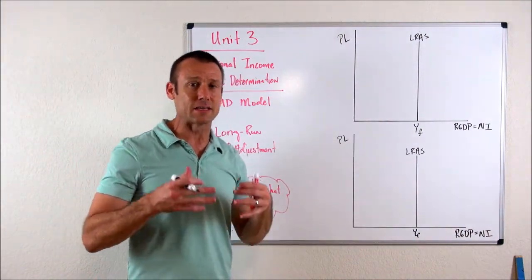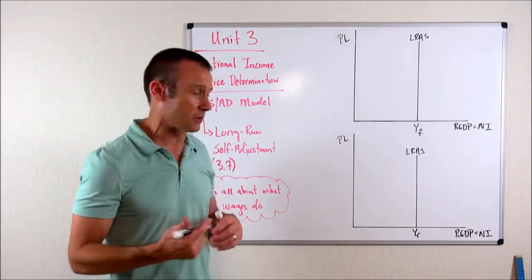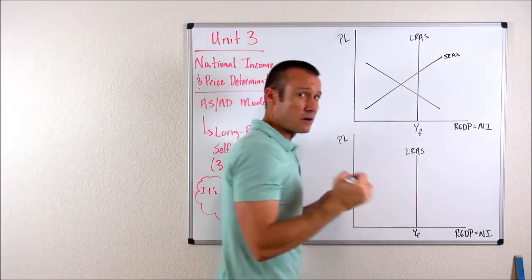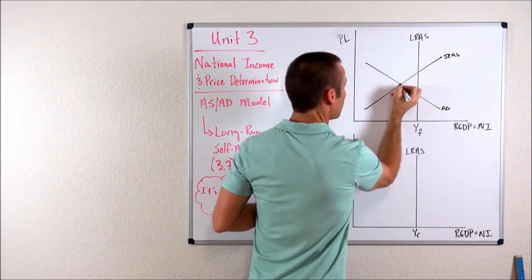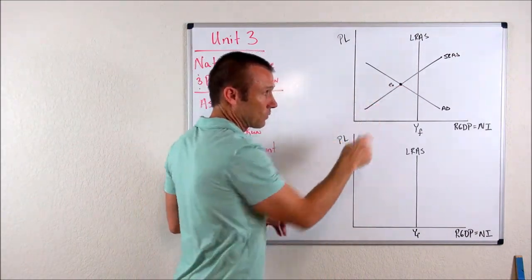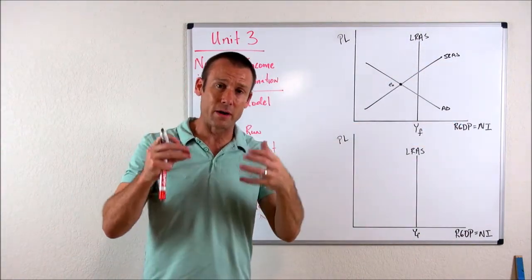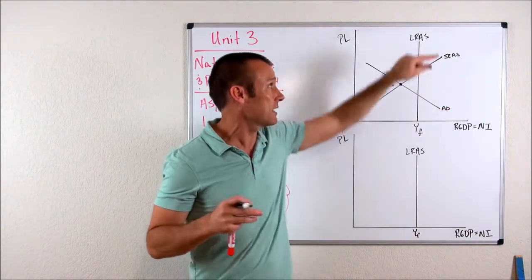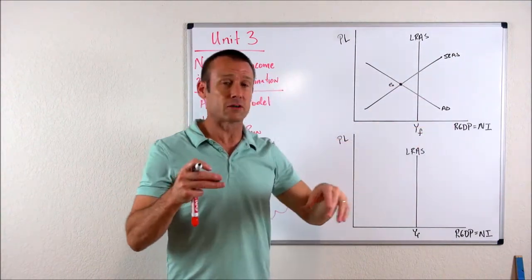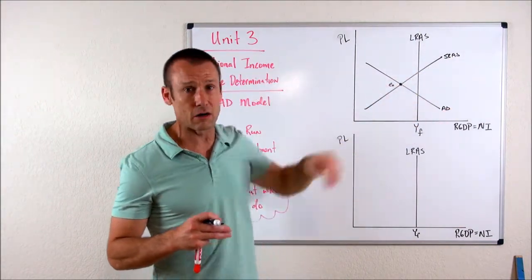what I want to show is an economy that's in a recession, that's producing less than full employment level of output. So if we're in a recession, our intersection point between our SRAS curve and our AD curve is to the left of the LRAS curve. So put my E sub zero right there. And remember that is the equilibrium. The equilibrium is where these two curves intersect. That's where we're always at.